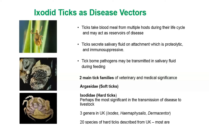There are three genera of ixodid ticks in the UK: Ixodes, Haemaphysalis, and Dermacentor. In the top left picture you can see a questing nymph of Ixodes ricinus, which is waiting for a host to come along. Most of the ticks described from the UK are parasites of small mammals and birds.